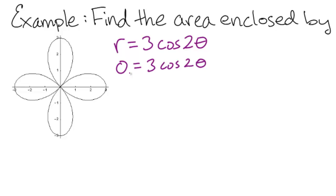So in this case, 0 equals 3 cosine 2 theta. So we need to know when cosine 2 theta is 0. So that will happen when 2 theta equals pi over 2, 3 pi over 2, 5 pi over 2, 7 pi over 2, etc.